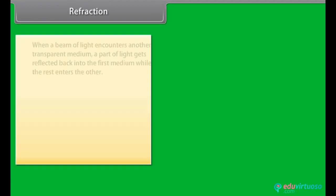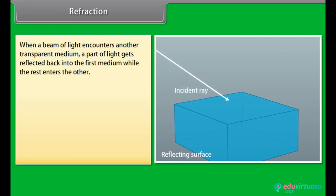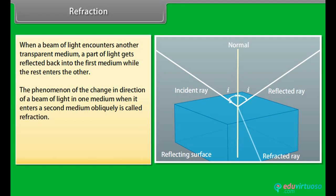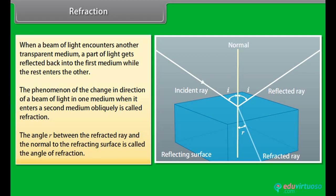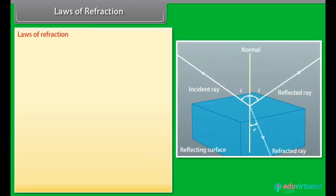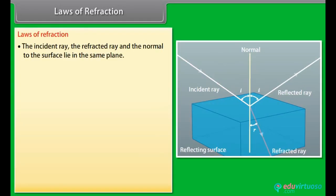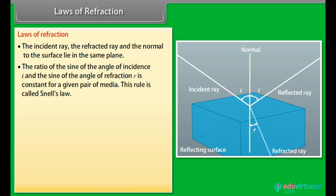Refraction: When a beam of light encounters another transparent medium, part of the light gets reflected back into the first medium while the rest enters the other. The phenomenon of the change in direction of a beam of light when it enters a second medium obliquely is called refraction. The angle R between the refracted ray and the normal to the refracting surface is called the angle of refraction.